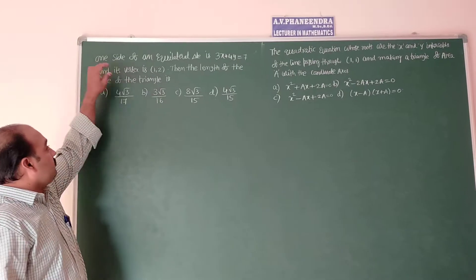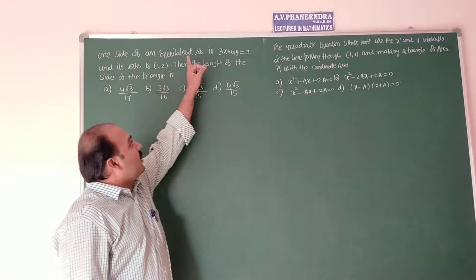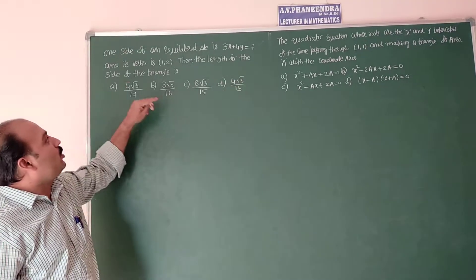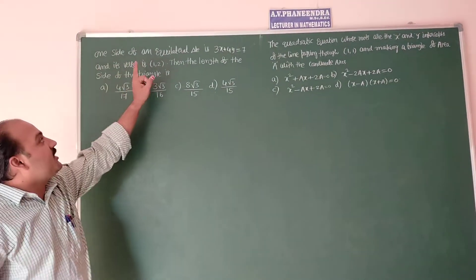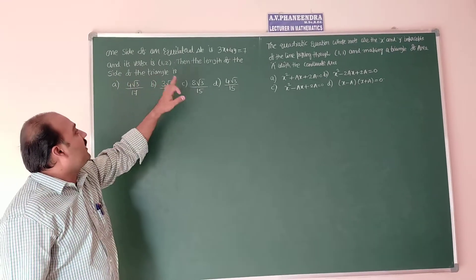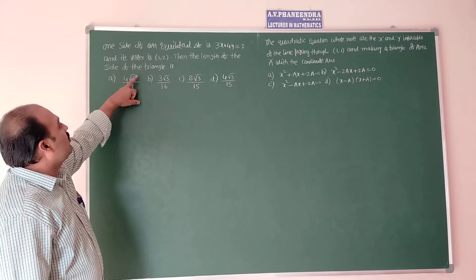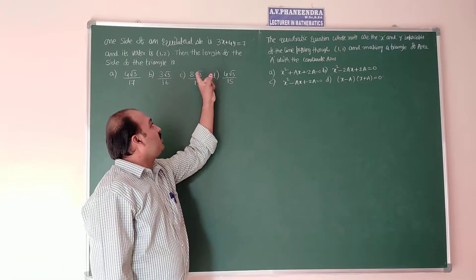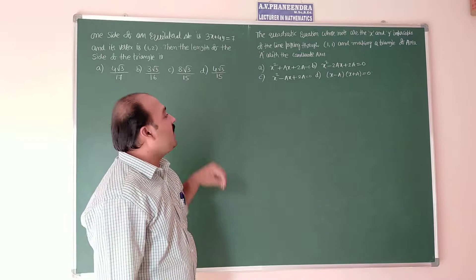See here, one side of an equilateral triangle is 3x plus 4y equal to 7 and its vertex is 1,2, then the length of side of the triangle is: first option is 4 root 3 by 17, 3 root 3 by 16, 8 root 3 by 15, and 4 root 3 by 15.